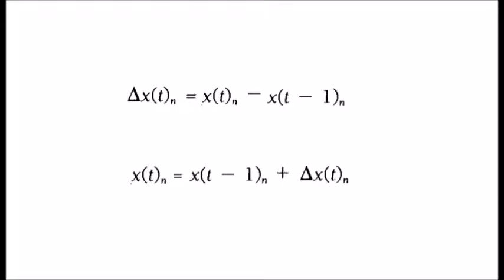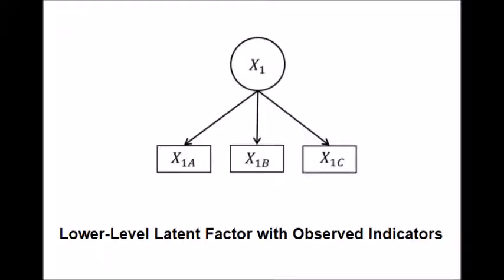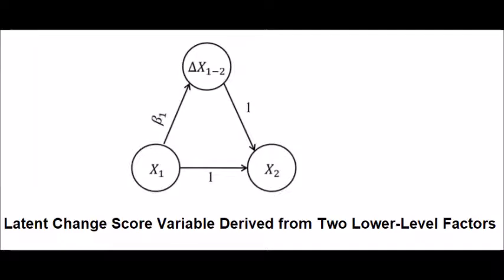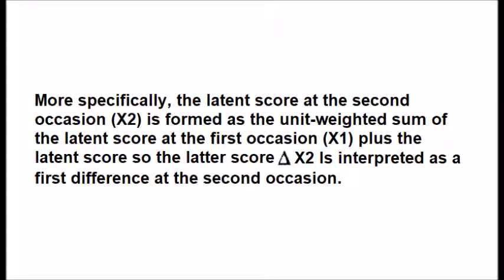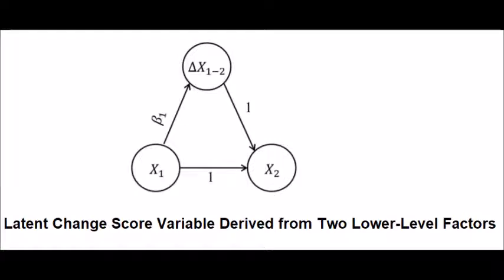When you construct the latent difference score model using structural equation modeling in AMOS, you will model your independent variable, mediating variable, and outcome variable as lower-level latent factors with observed indicators. You will derive your latent change score variable from two lower-level factors. The latent score at the second occasion X2 is formed as the unit-weighted sum of the latent score at the first occasion X1 plus the latent change score, so the change in X2 is interpreted as the first difference at the second occasion.